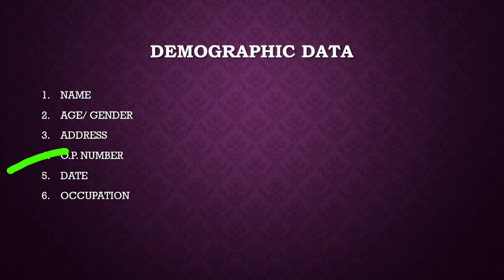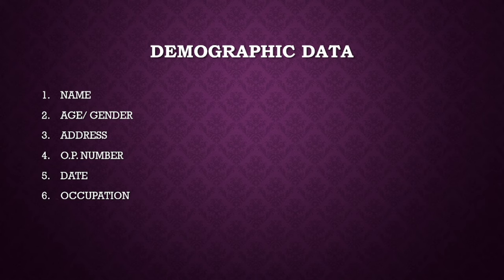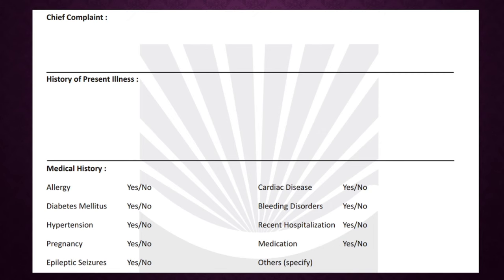Then we have the OP number of the patient, so that if two patients have a similar name, we can differentiate between them using the OP number. We also note the date when the patient came to the clinic, and occupation — which can be written under demographic data or under personal history, which we will discuss later.